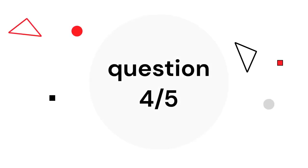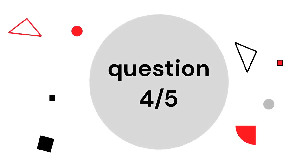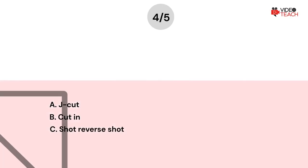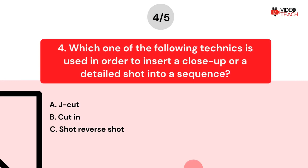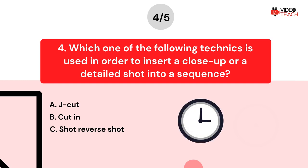Question number four. Which one of the following techniques is used in order to insert a close-up or detailed shot into a sequence? Option A: J cut. Option B: Cut in. Option C: Shot reverse shot. Now you have about 15 seconds to think about your answer.